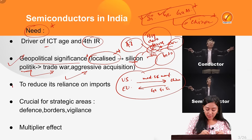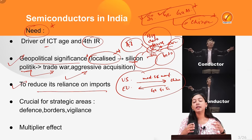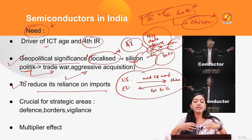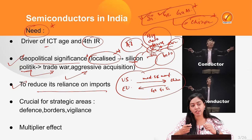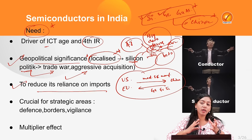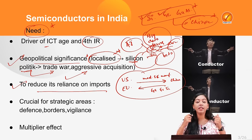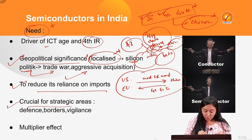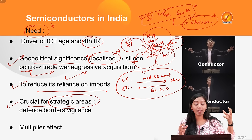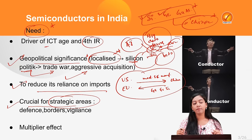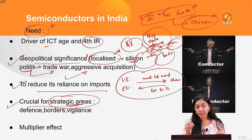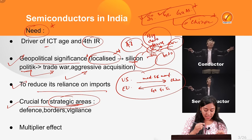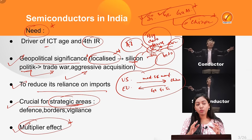Third, India is heavily reliant on countries like China and the USA for semiconductor products and basic chips. As a developing economy engaging more in services and ICT, India needs semiconductors in huge amounts but has no manufacturing facility yet, so most are imported. Semiconductors are also crucial for strategic areas including satellite technology, defense, and surveillance sectors, making self-reliance essential for national security.